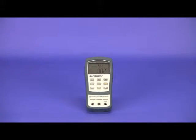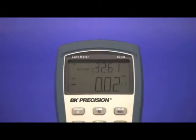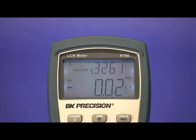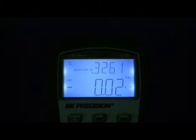Both meters feature large, easy to read primary and secondary displays with 40,000 and 10,000 counts respectively. The model 879B's display features a bright, evenly lit backlight.